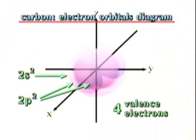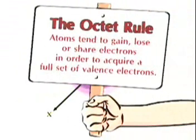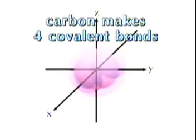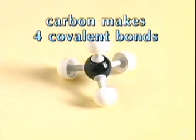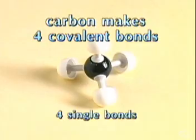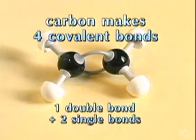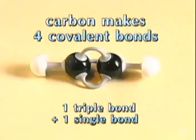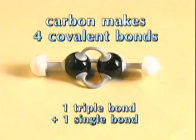Carbon exactly fills half of its valence level with electrons. The octet rule says that atoms tend to gain, lose, or share electrons in order to acquire a full set of valence electrons. A carbon atom usually satisfies the octet rule by making four covalent bonds with other atoms. These bonds can be four single bonds, a double bond and two single bonds, or a triple bond with one single bond. Carbon is the only element that has the ability to bond in such a variety of combinations.